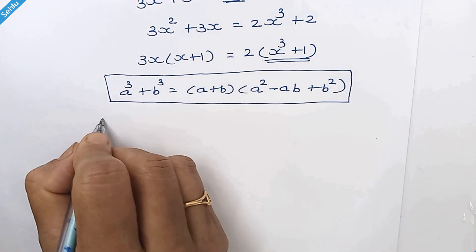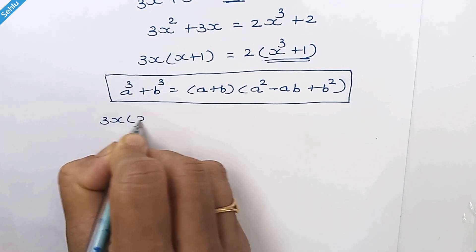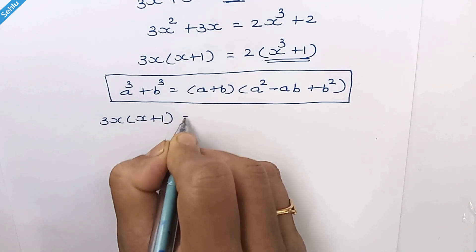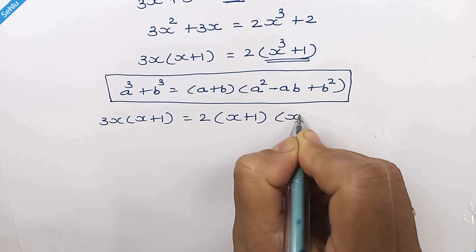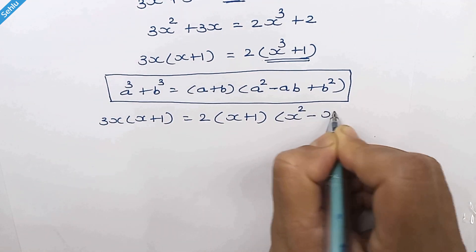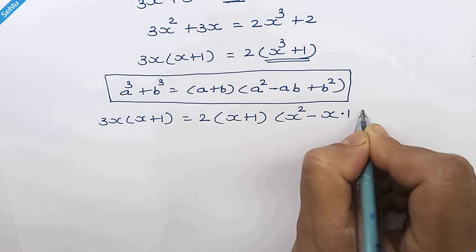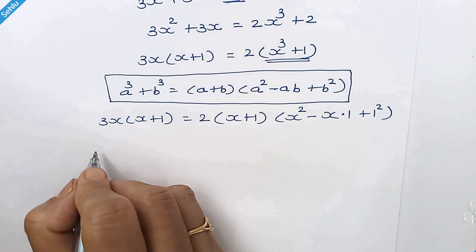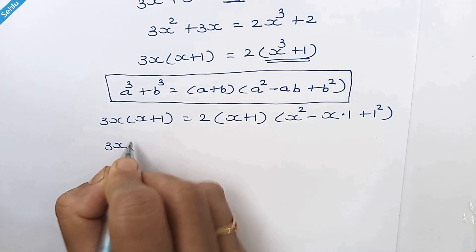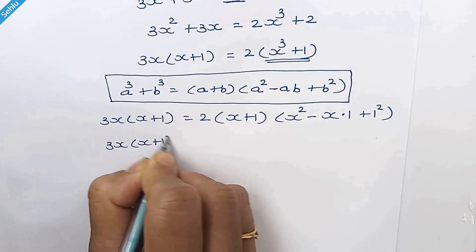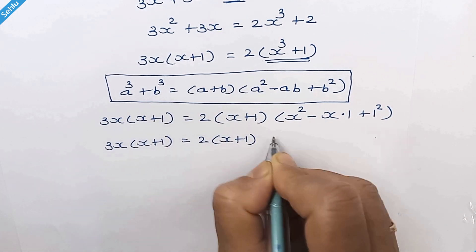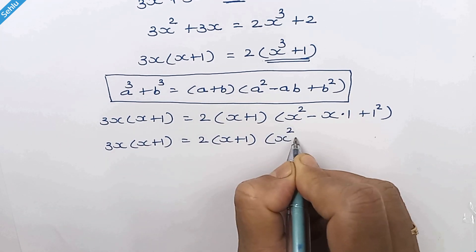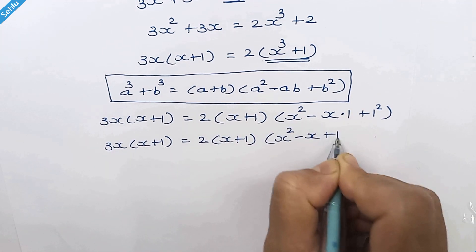Then it can be a plus b times a square minus ab plus b square. So here we can write x plus 1 times x square minus x times 1 plus 1 square. Simplifying more, so it will be x square minus x plus 1.